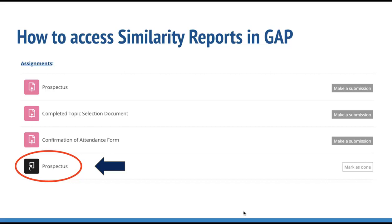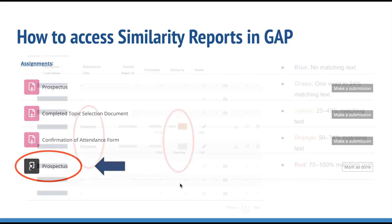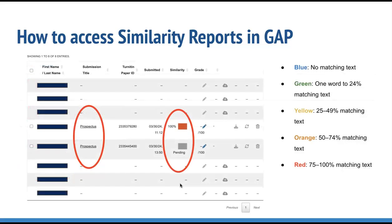To access your student similarity reports, click the Turnitin submission link for that assignment within GAP. This will display the submission summary for that assignment. When a similarity report is available for viewing, a similarity percentage score will be displayed in the similarity column. Similarity reports that have not yet finished generating are represented by a grayed out icon in the similarity column. Unavailable reports may not have generated yet, or assignment settings may be delaying report generation.